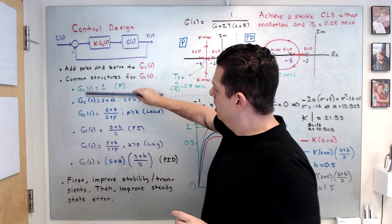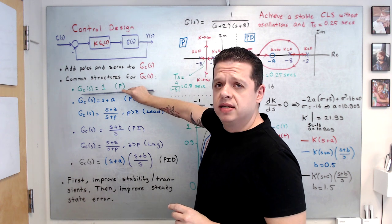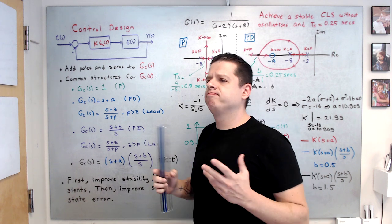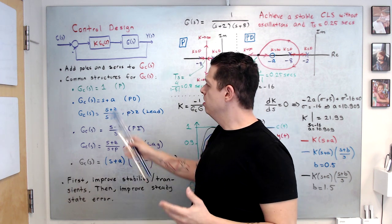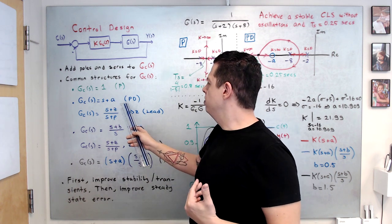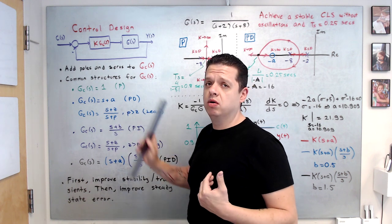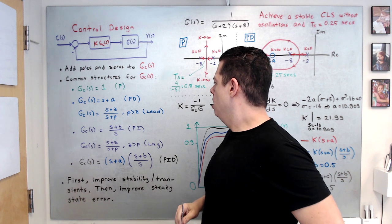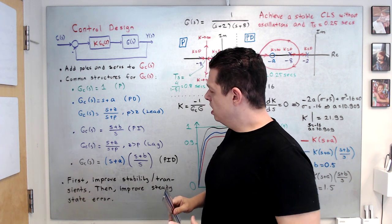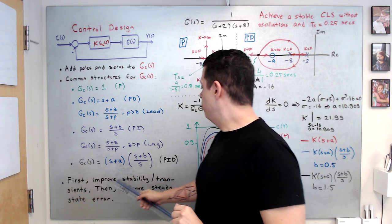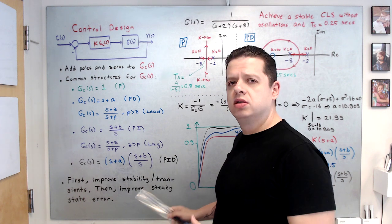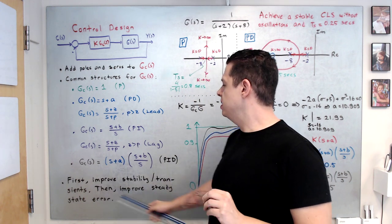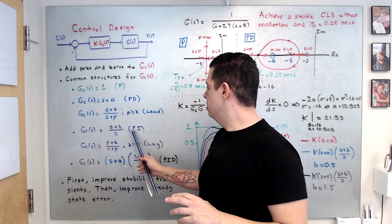If a P compensator gives you stability, the desired level of transients, and settling time — use it. You don't need to go with PD or lead. Always try the P compensator first. If it doesn't work, try PD and lead. When you design control, first improve stability, transients, or settling time. Once you achieve this, then improve steady-state error using PI or lag.